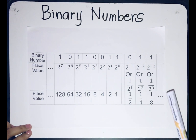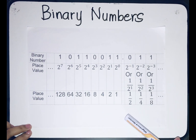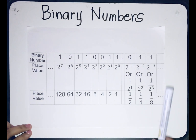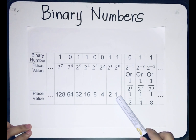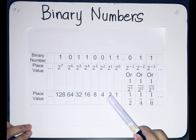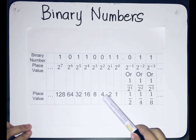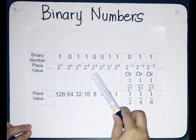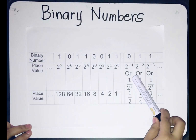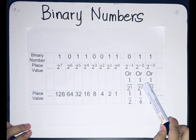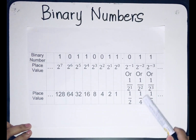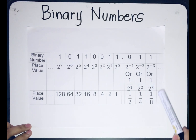For you to easily remember these place values, let's convert them into whole numbers. We have 2 raised to 0, which equals 1; 2 raised to 1, which is 2; 2 raised to 2, which is 4, and so on. On the right side, we have fractions: 1 over 2 raised to 1, which is 1 half; 1 over 2 raised to 2, which is 1 fourth; 1 over 2 raised to 3, which is 1 eighth, and so on.